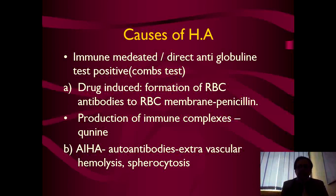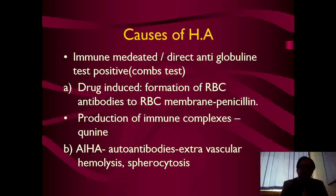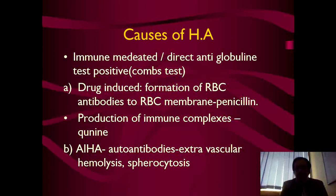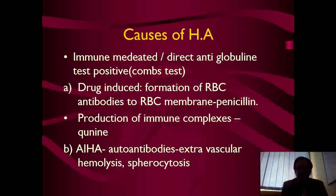The causes of hemolytic anemias may be immune-mediated, in which the direct antiglobulin test is positive — in other words, the Coombs test is positive. Sub-causes may be drug-induced, in which there is formation of RBC antibodies, meaning antibodies against the RBC membranes. The classical example is penicillin. The second sub-cause is production of immune complexes; the example is quinine, which causes immune complexes that lyse the RBCs.